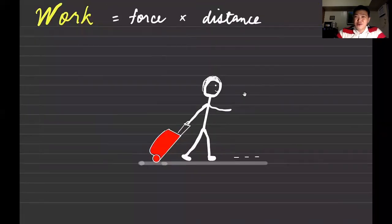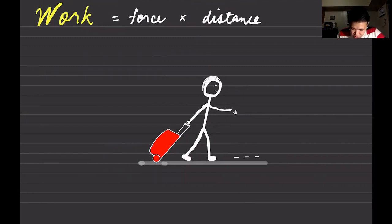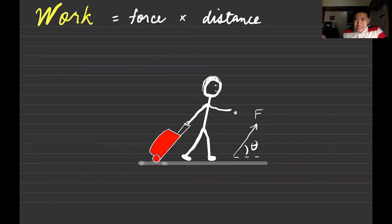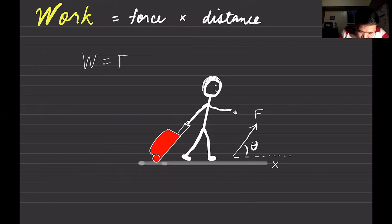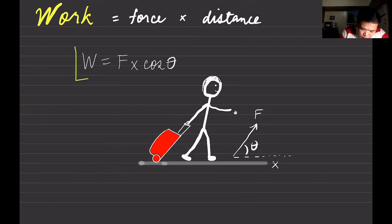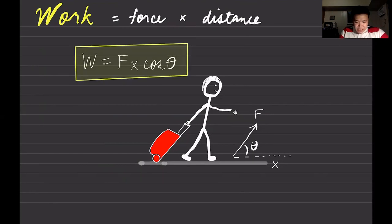There are other definitions of work. What if you apply a force at some angle with respect to the distance you're covering? In this situation, you're applying a force in a direction that is pulling slightly upward at some angle, but the distance you are covering is along the horizontal. So there's another definition: Work = F × d × cosθ — force times distance times the cosine of the angle between them.